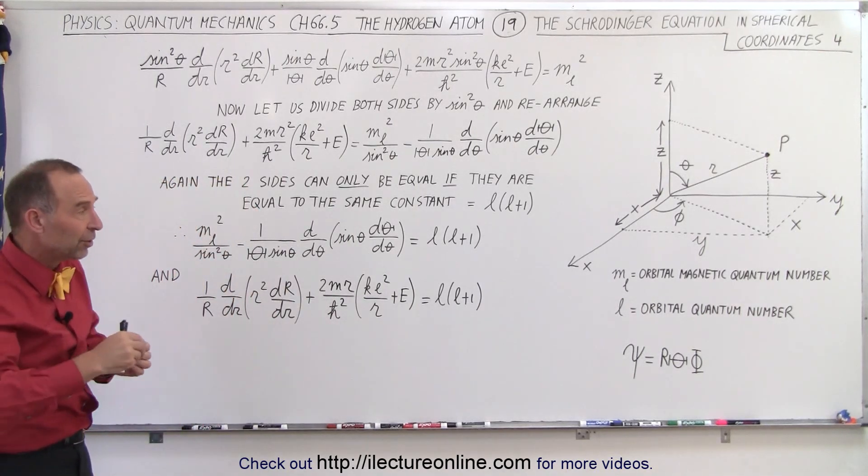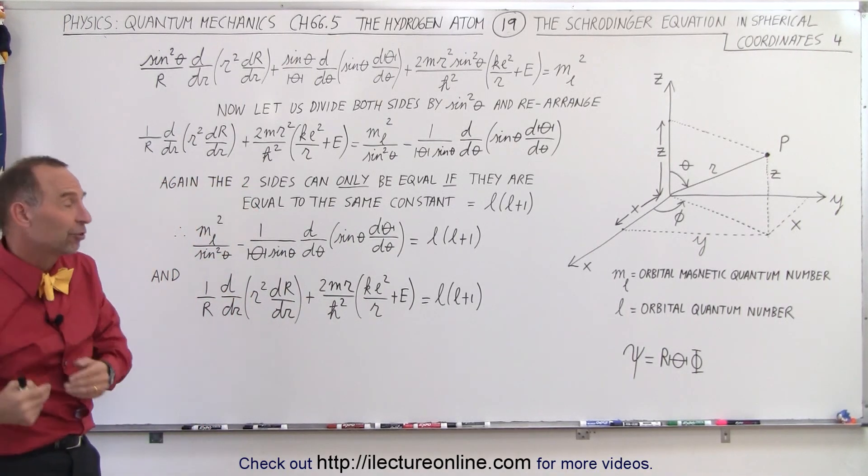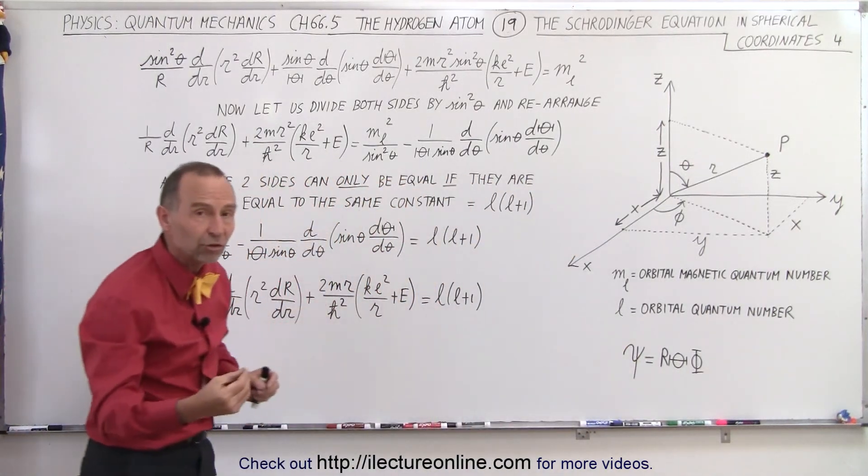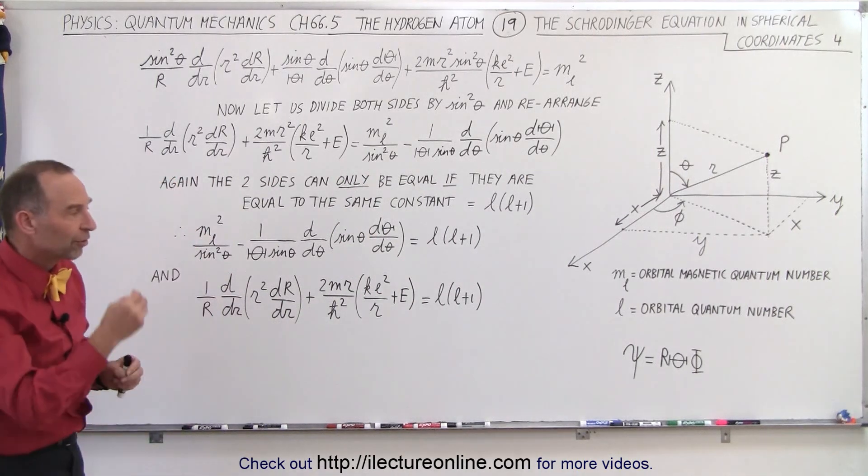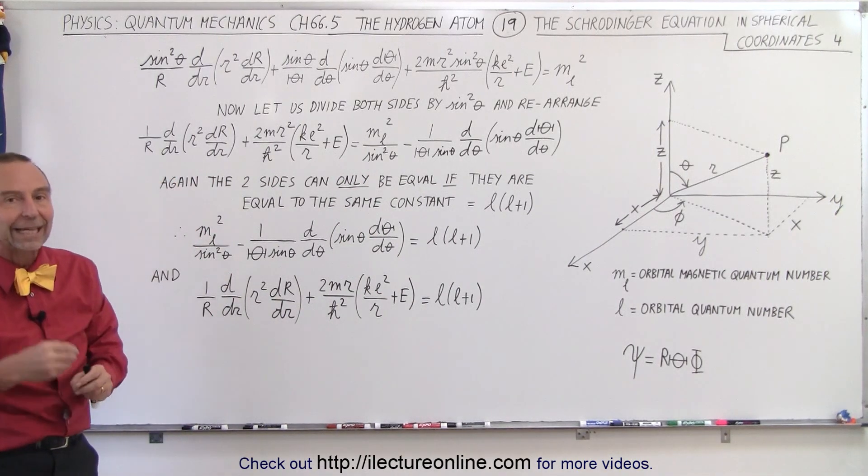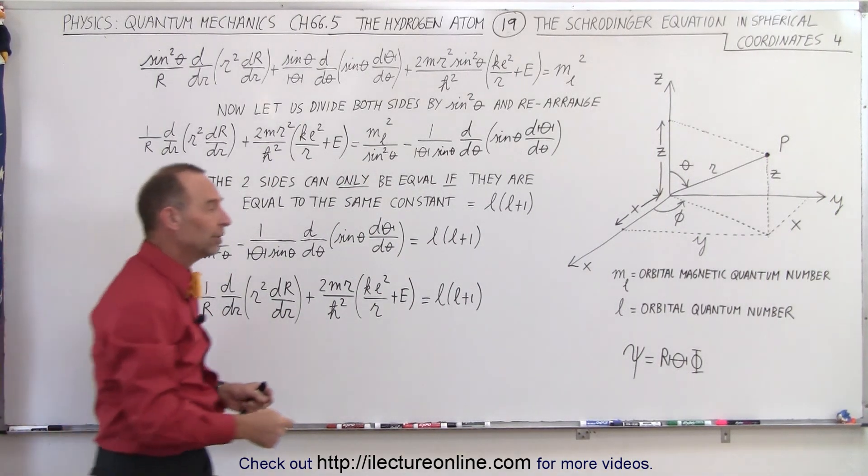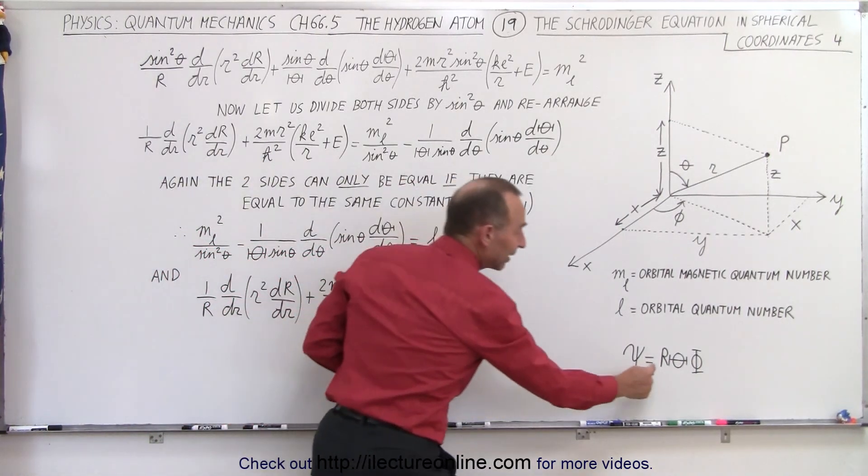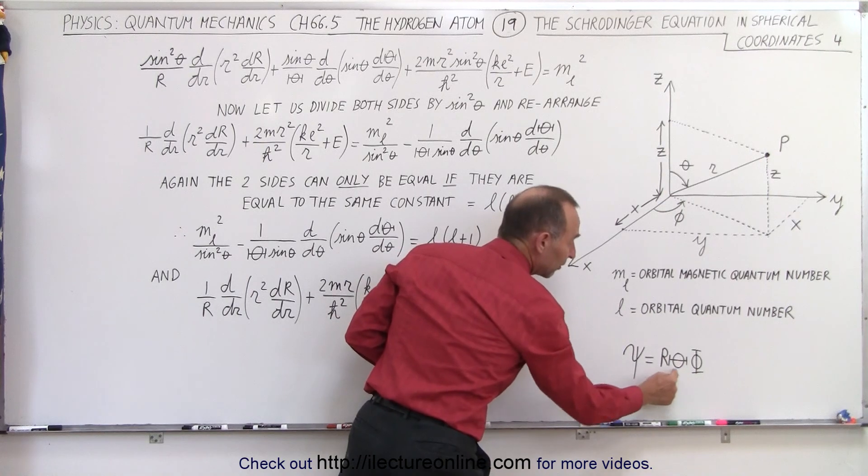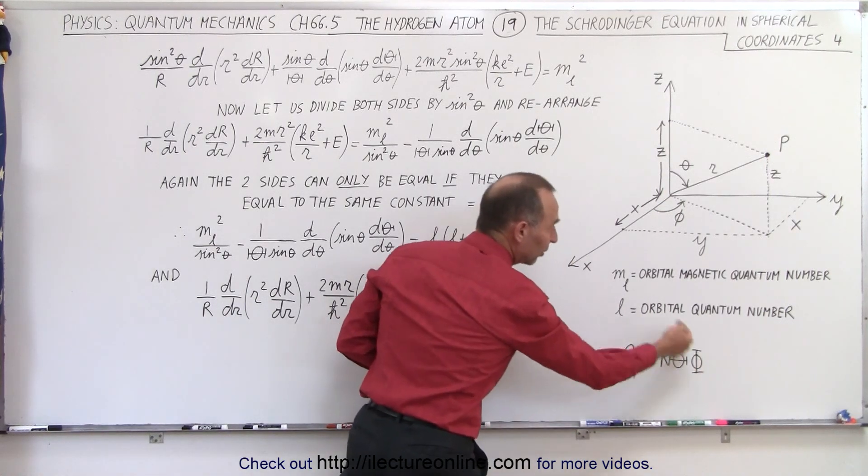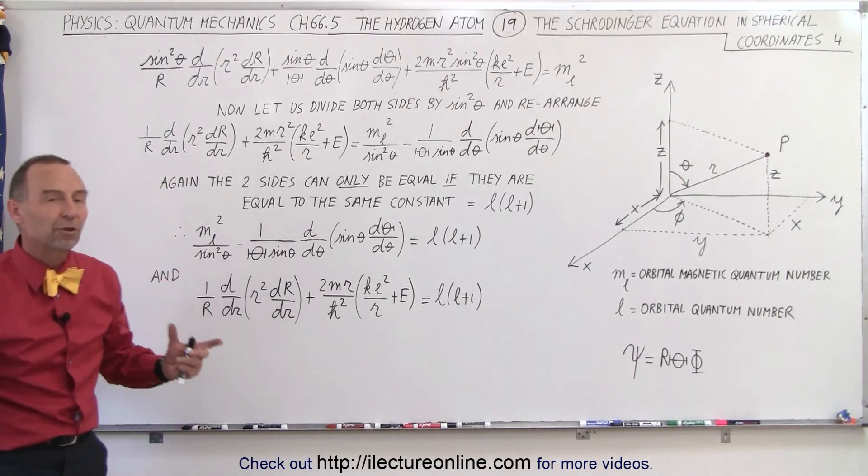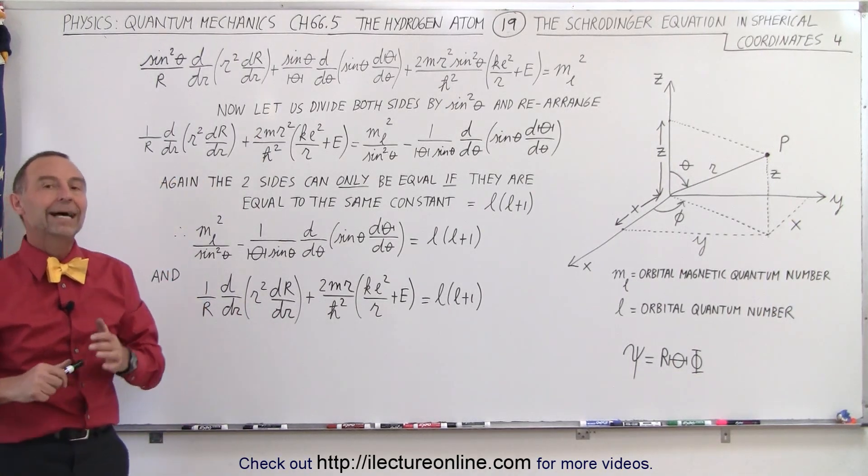Together with the previous video, we now have three separate differential equations, where each of the three equations represent each of the three functions that are functions of a single variable r, theta, and phi. Multiply together, it gives us the original wave function, and if we then find the individual solutions to the three differential equations and multiply those together, we'll have a solution to our original wave equation that describes the motion of the electron in the hydrogen atom.